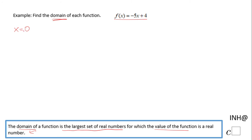So you have to ask yourself what numbers can I plug in. Can I plug in zero? The answer is yes. We can evaluate that for zero if you want. We have negative 5 times 0 plus 4, which becomes 0 plus 4, which is 4. So when I plug zero in, I get a real number out of 4.